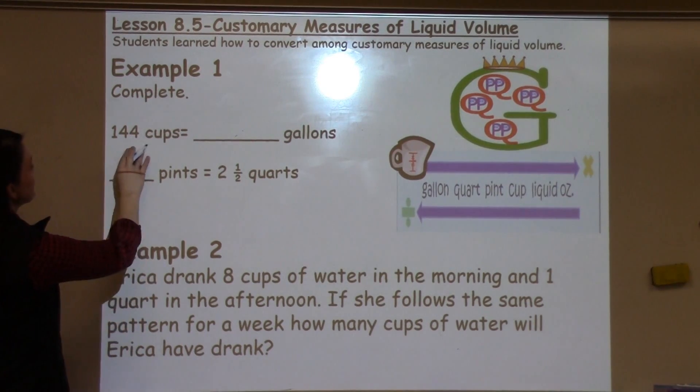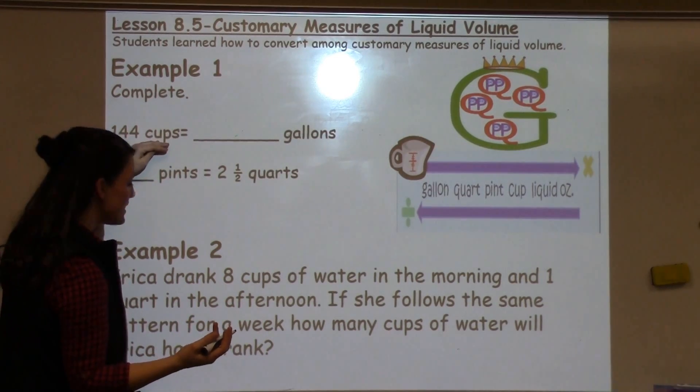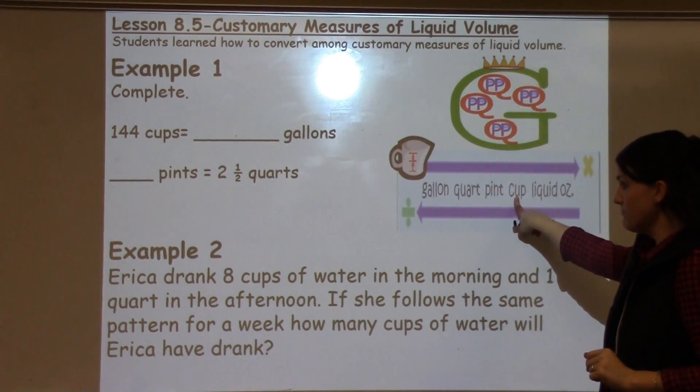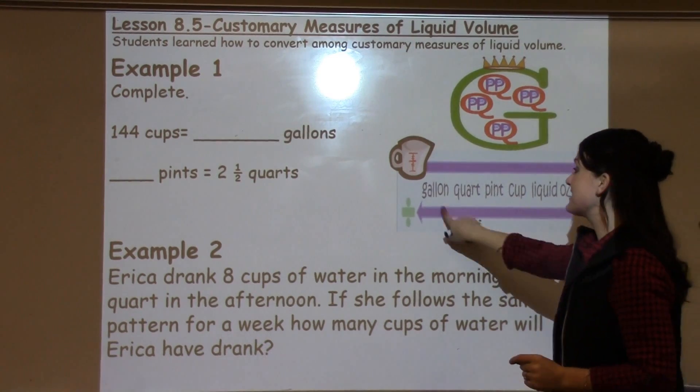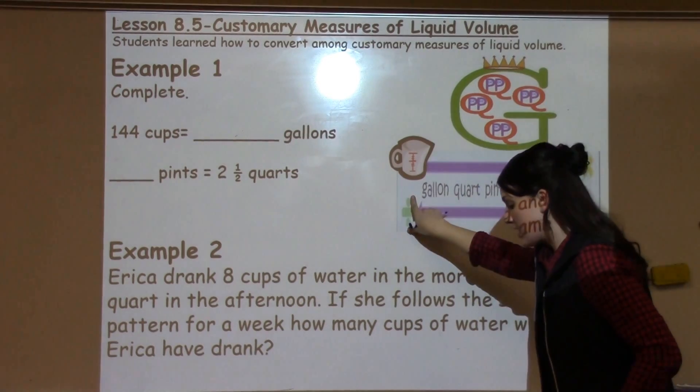Example one says, 144 cups equals how many gallons? So, I have a number for cups. So, that's where I'm going to start on my diagram. I want to know how many gallons. So, I'm moving cups, gallons, cups, gallons.